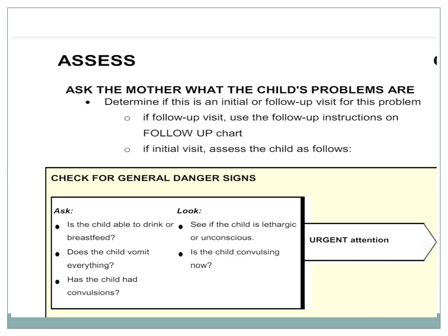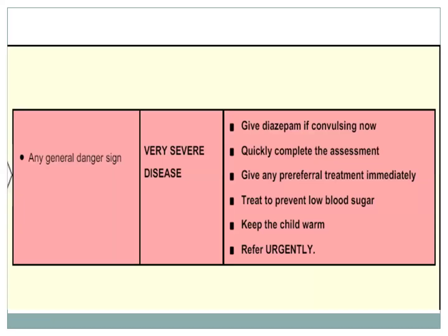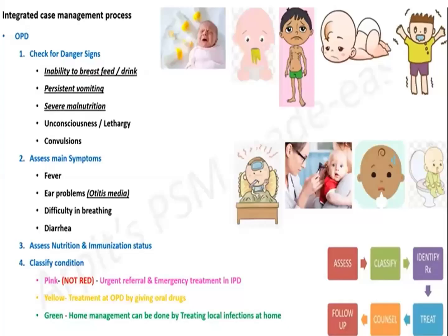All of these signs require urgent attention, and if any are present, the child requires urgent referral. Any general danger sign indicates severe illness. If the child is convulsing, diazepam is given by rectal route along with anticonvulsants. We quickly complete the assessment, prevent low blood sugar as hypoglycemia is a serious condition, keep the child warm to prevent metabolic complications, and refer urgently.